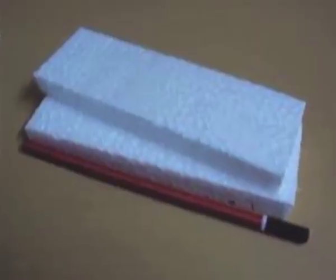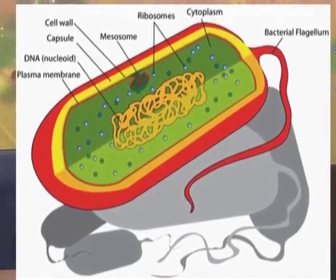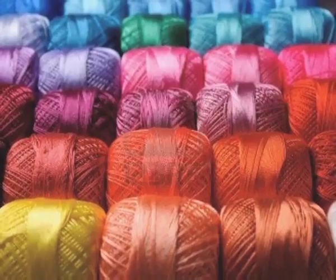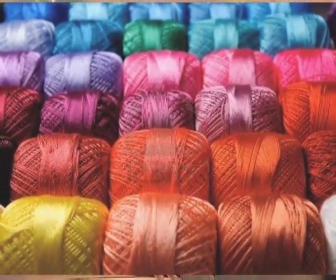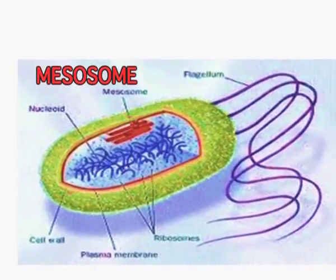Dear learners, you can do a little activity: take a thermopole or cardboard and with the help of plasticine make a bacterial cell, using threads of different colors and thickness to show the pili and flagella. Since mitochondria are absent, how does cellular respiration take place in these prokaryotic organisms? Cellular respiration takes place in certain organelles known as mesosomes — internal extensions of the plasma membrane, as you can see in the figure. So cellular respiration takes place in these mesosomes in the absence of mitochondria.